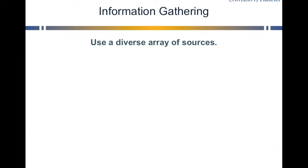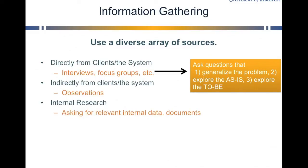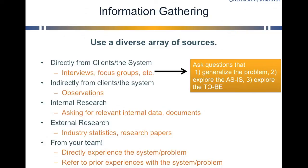Where do you gather information? The bottom line is to use a diverse array and be creative with your sources. You can do interviews or focus groups directly with the client about the system — asking questions that generalize the problem, the why questions, questions that explore the as-is and help flesh out the current situation, and questions that help you understand the characteristics of the ideal situation. You can also gather information from observations — going and watching, or tracking information on a website. You can do research from the company or from publicly available statistics. From your team itself, you may have direct experience, or you can shadow the person scheduling courses, or actually be part of the scheduling team to see the challenges and frustrations they actually face.